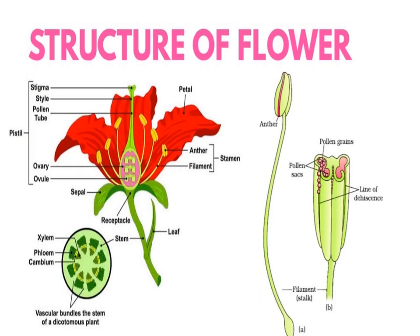The androecium is the third whorl of the floral leaves; it follows the corolla. It is the male reproductive organ of the flower, and its leaves are known as stamens. The stamen consists of a fine filament that ends in the anther. The anther is divided into two chambers containing pollen grains. The androecium produces pollen grains inside the pollen chambers.